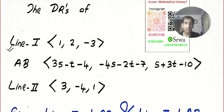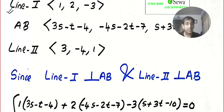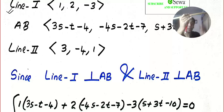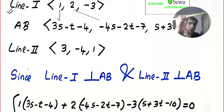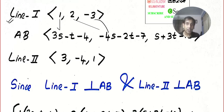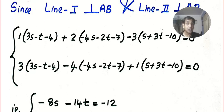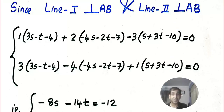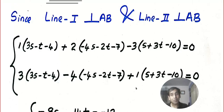Write these direction ratios neatly. You must be very careful with the simplification. Since Line 1 and the shortest distance are perpendicular, apply the condition a₁a₂ + b₁b₂ + c₁c₂ = 0 to get the first equation. Similarly, since Line 2 and the direction of shortest distance are also perpendicular, you get a second equation. Many students at bachelor's level make mistakes in this simple algebra, so try it yourself before checking.